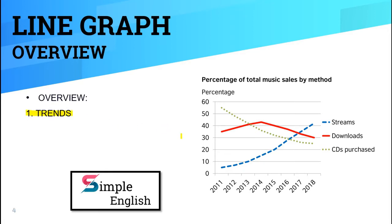The first thing to write in the line graph overview is the trend. Trend doesn't mean where the line is going at any moment — trend means how the line has changed over the entire period. For example, if a line goes up and then down, you need to pay attention to the beginning and the end. If the end is lower than the beginning, it is a downward trend.